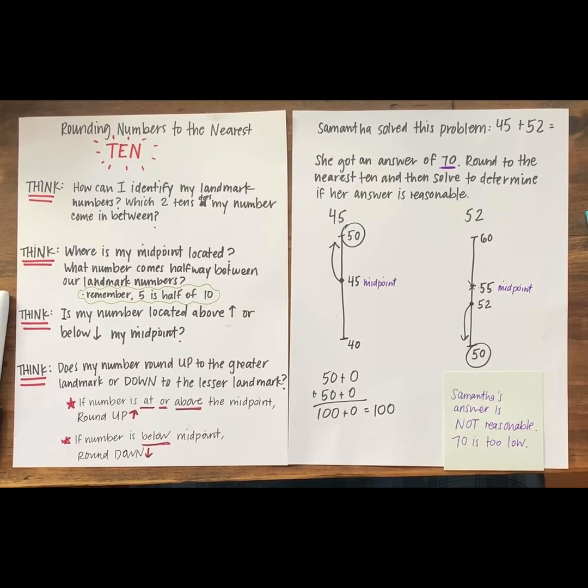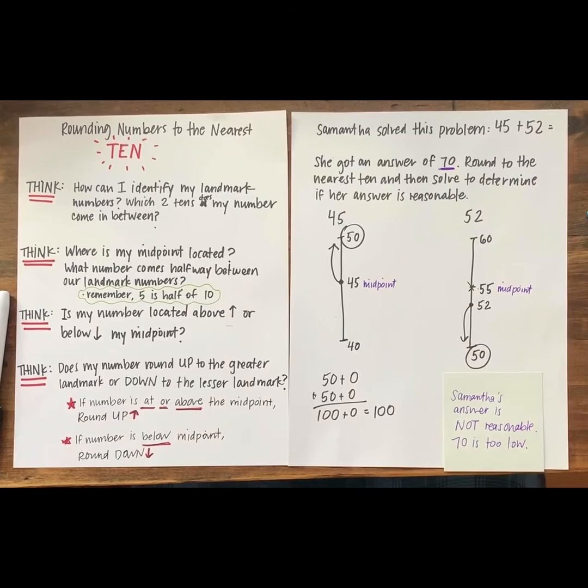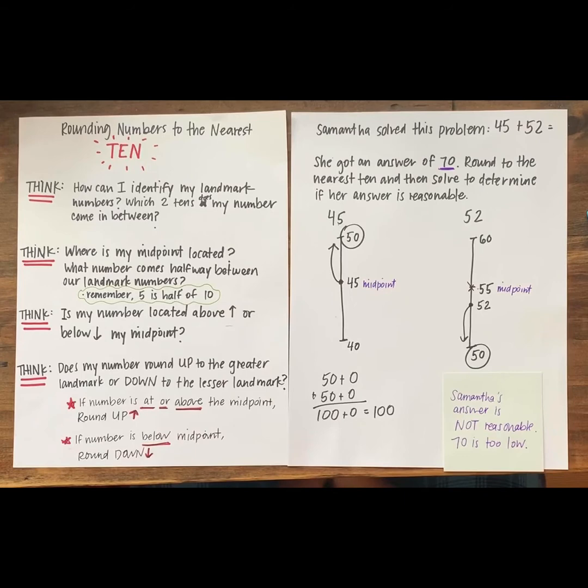Thanks for your help today team. We can see that rounding can help us determine whether or not an actual answer that we calculated is reasonable or makes sense. This is a great way to quickly check our work. Before we move on to our workshop problems, how can we use a vertical number line today to help us round to the nearest 10?